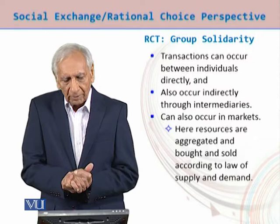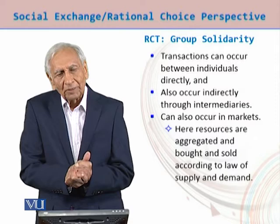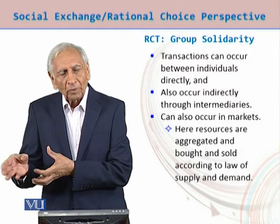Transactions can occur between individuals directly, or these could occur indirectly through intermediaries. When we talk about intermediaries, then perhaps we have the idea of a market — where there are buyers, sellers, and producers.